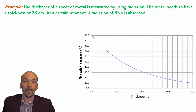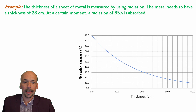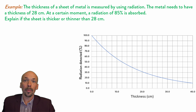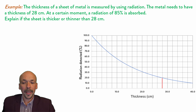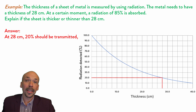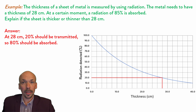The thickness of a sheet of metal is measured by using radiation. The metal needs to have a thickness of 28 cm. At a certain moment, a radiation of 85% is absorbed. Looking at the graph at 28 cm, there would be 20% radiation transmitted — that's the amount the sensor will detect. So at 28 cm, 20% should be transmitted, meaning 80% should be absorbed.